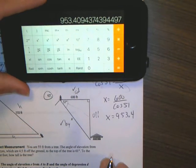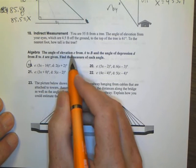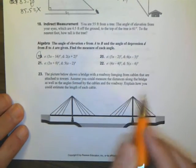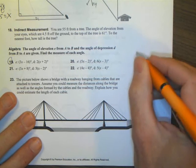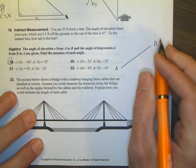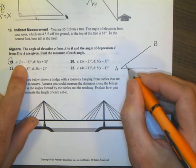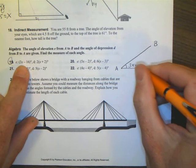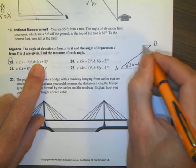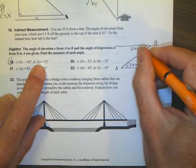Let's look at one more of these before we call it a day. It says the angle of elevation E from A to B and the angle of depression D from B to A are given. Find the measurement of each angle. Here's what they're telling you. I have a line A to B. Now my angle of elevation, that's how much I'm going up right here, is 3X minus 16 degrees. My angle of depression, which is this one, is 2 times X plus 2 degrees.